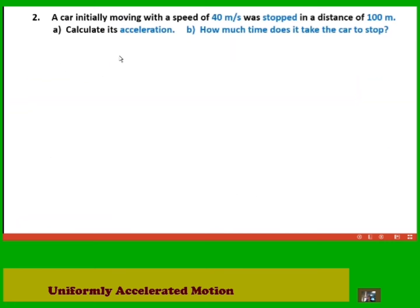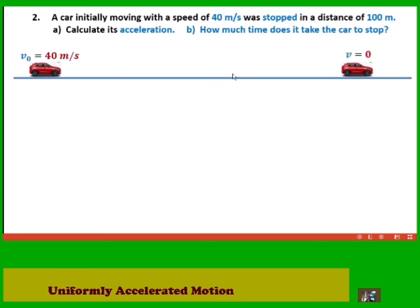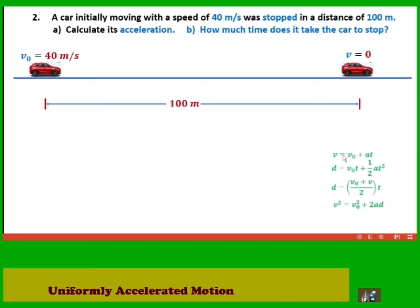Problem 2: A car initially moving at 40 meters per second was stopped in a distance of 100 meters. The car travels 100 meters while decelerating from 40 meters per second to a final speed of zero. We will calculate the acceleration using the kinematic equations, choosing the equation appropriate to the given information in the problem.